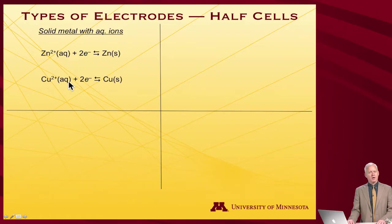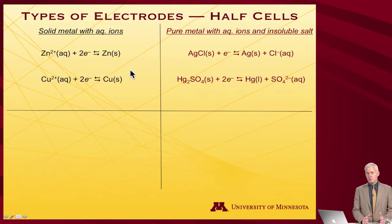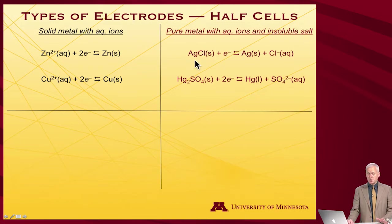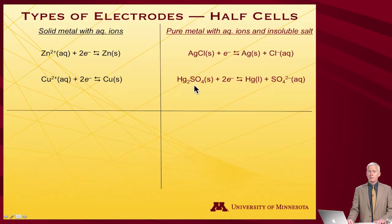We've already looked at one type where we have an aqueous ion reduced to a metal — solid metal in contact with aqueous ions. Another common half cell type is a pure metal in contact with an insoluble salt. For example, silver chloride is insoluble in water; when reduced it generates pure silver metal and puts chloride anion into solution. Another possibility is mercury sulfate — also an insoluble solid — which is reduced by two electrons to make pure liquid mercury and liberate sulfate anions into solution.